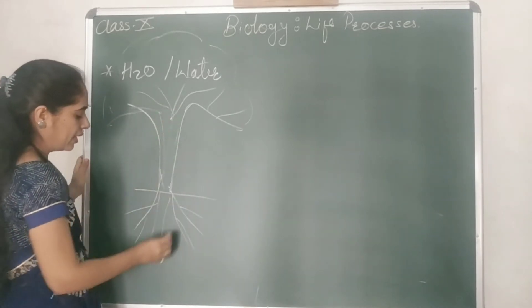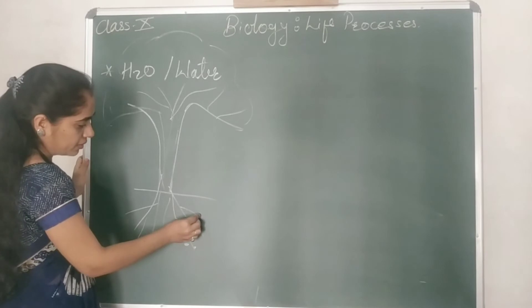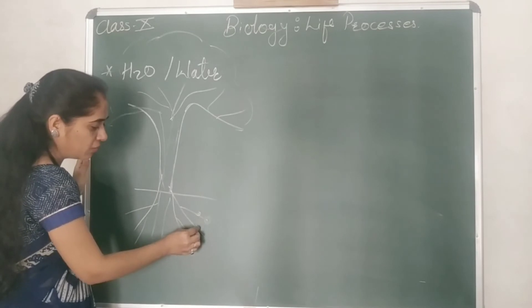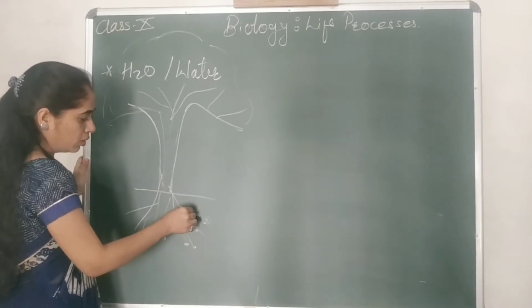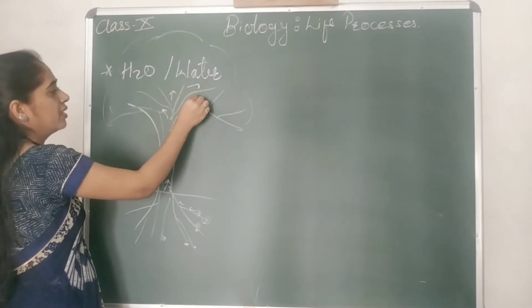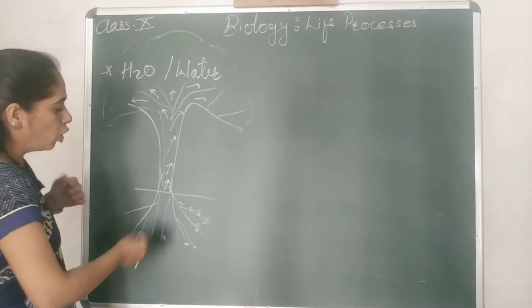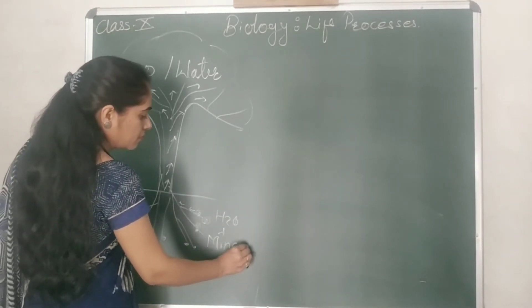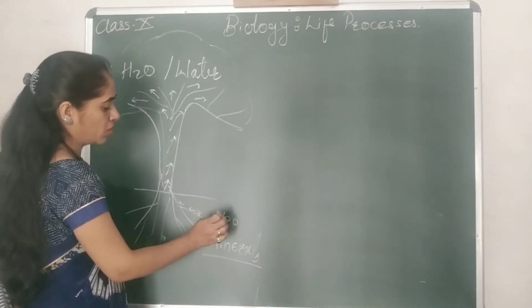Around the soil particles there is a thin film of water molecules. The roots absorb this water and supply it to all parts of the plant, including the aerial parts. Along with water, they also carry minerals like nitrogen and calcium, but right now we will just talk about the water.